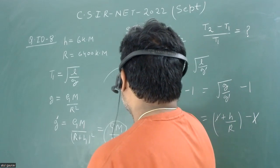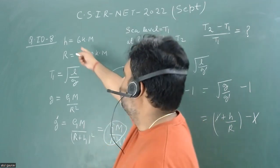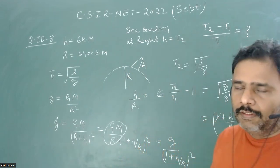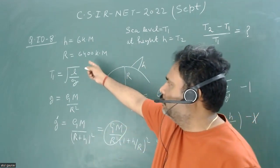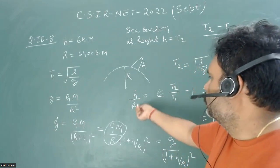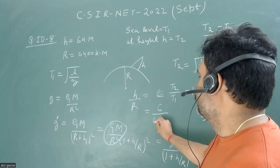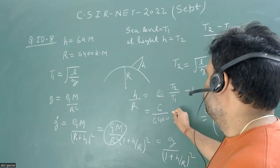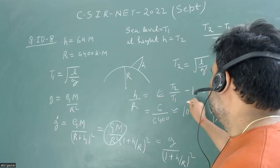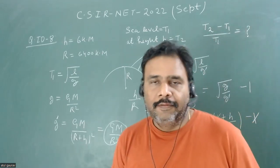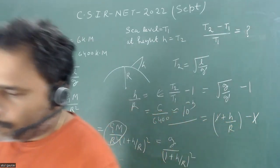So this will be the answer. We are given h is 6 kilometers, and we all know the radius is 6400 kilometers. So when we calculate h upon r, this is 6 upon 6400, which is approximately 10 to the power minus 3. So this will be the answer. Thank you.